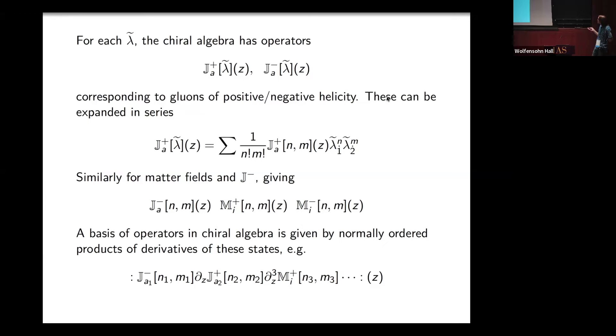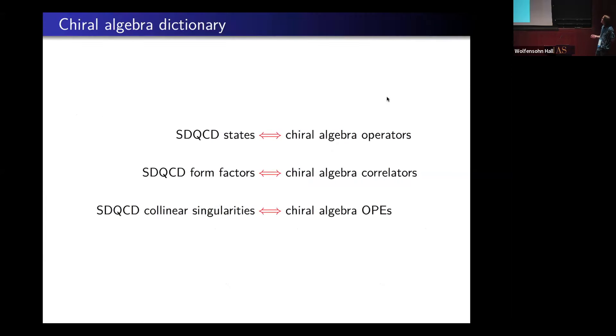If this is going too fast, the key point is that an operator in the chiral algebra is essentially a state in my gauge theory. The dictionary is the following: States will be operators. Form factors of self-dual QCD are going to be correlation functions of the chiral algebra. Collinear singularities are going to be operator product expansions. For the next couple of slides, I'll explain this. We'll take familiar formulas for collinear singularities and turn them into definitions of OPEs.